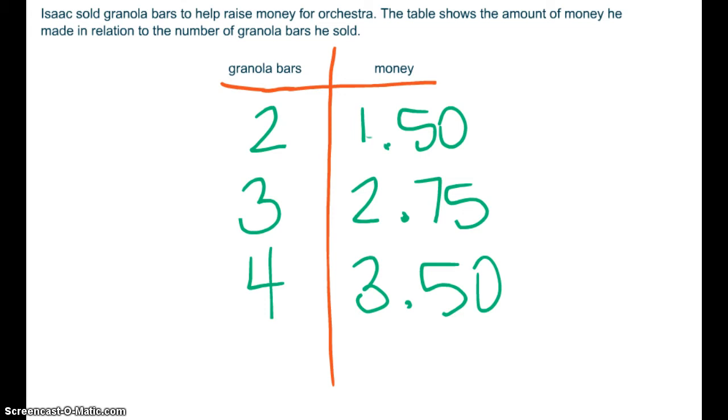I want you to pause the video and write this problem down. Isaac sold granola bars to help raise money for orchestra. The table shows the amount of money he made in relation to the number of granola bars he sold.